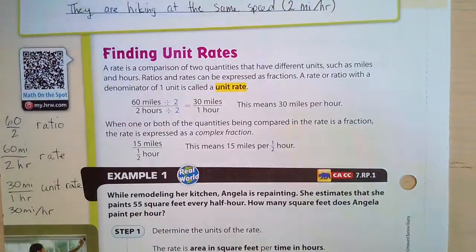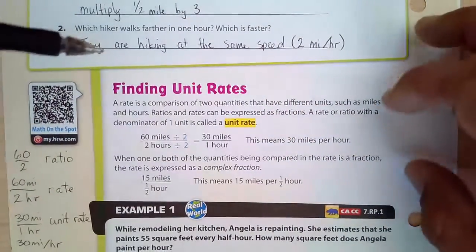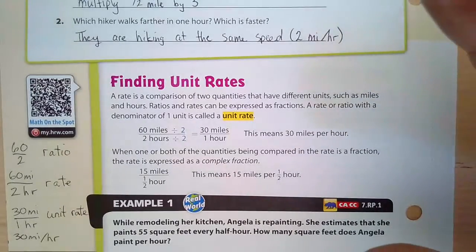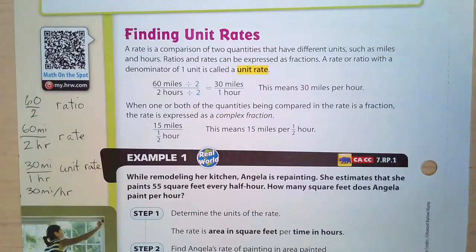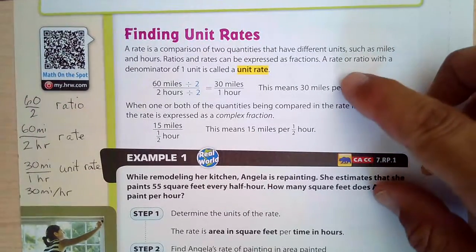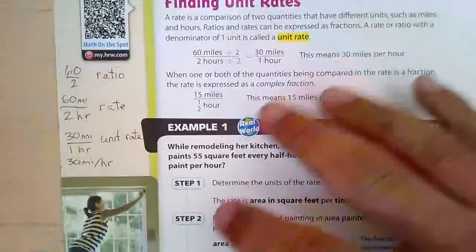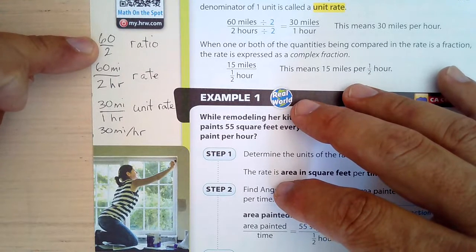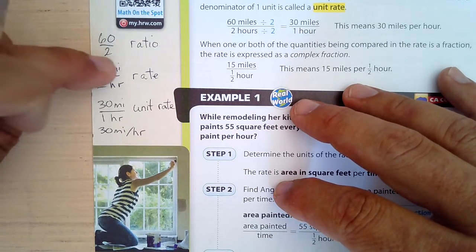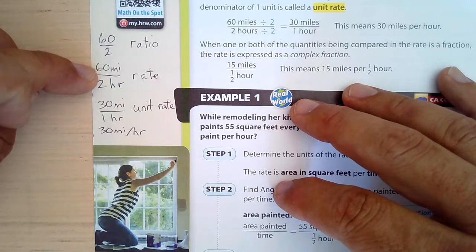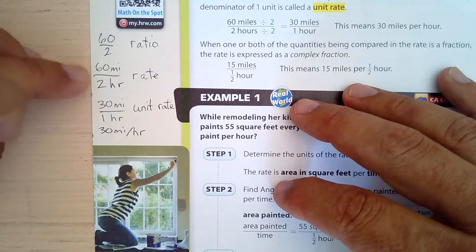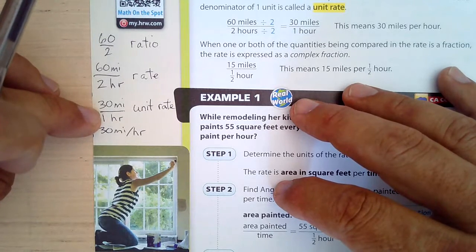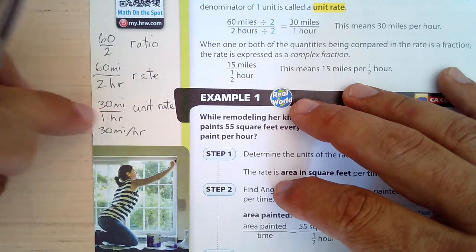Now we move on to finding unit rates. A rate is a comparison of two quantities with different units, such as miles and hours. Ratios and rates can be expressed as fractions. A ratio with a denominator of one is a unit rate. For example: a ratio is just a fraction; a rate attaches labels to it; and a unit rate simplifies it — like 60/2 becomes 30/1, or 30 miles per hour. The word 'per' represents the fraction line.